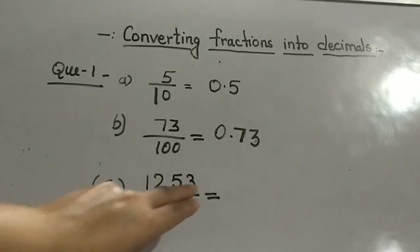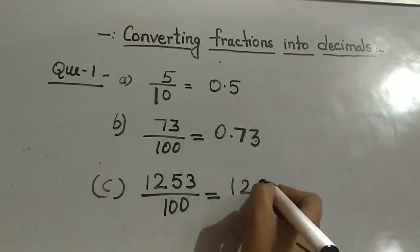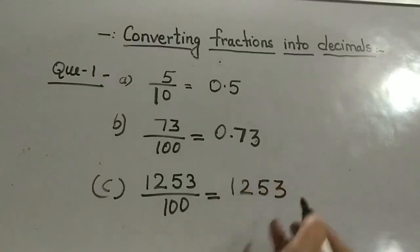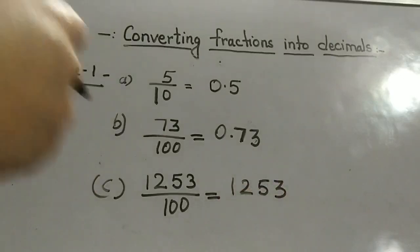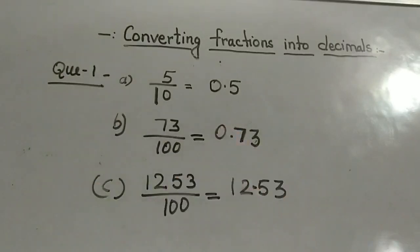Suppose I am writing here - now in the numerator we have four digits and in the denominator we have just two zeros, so we will copy all the digits here and we will count two places from the right side and we will put the point: one and two. We will put the point. One more example here: six upon thousand.